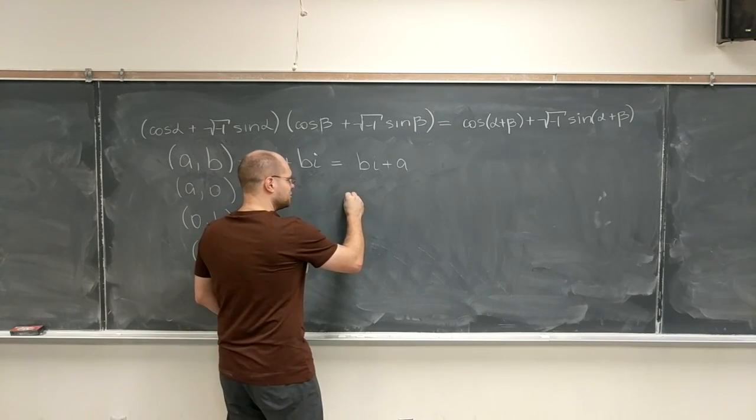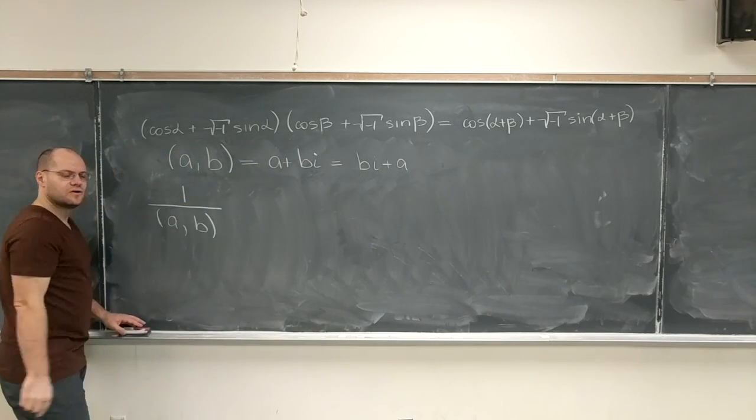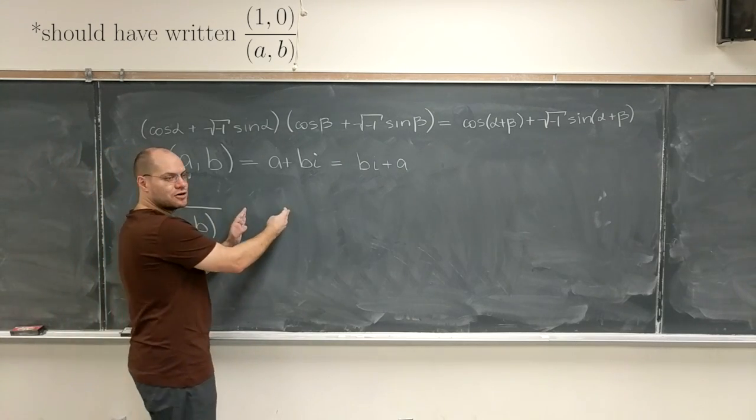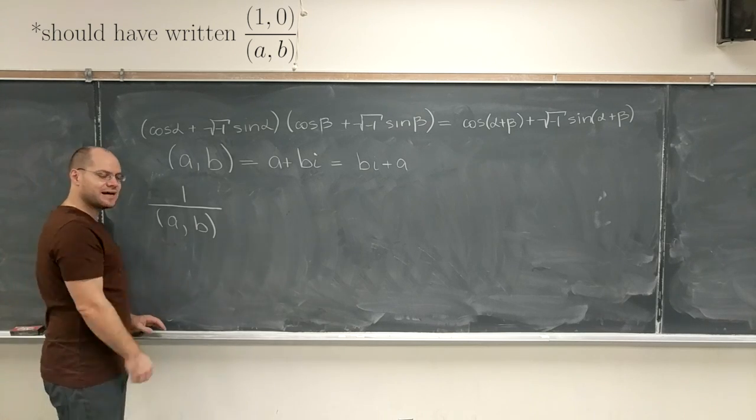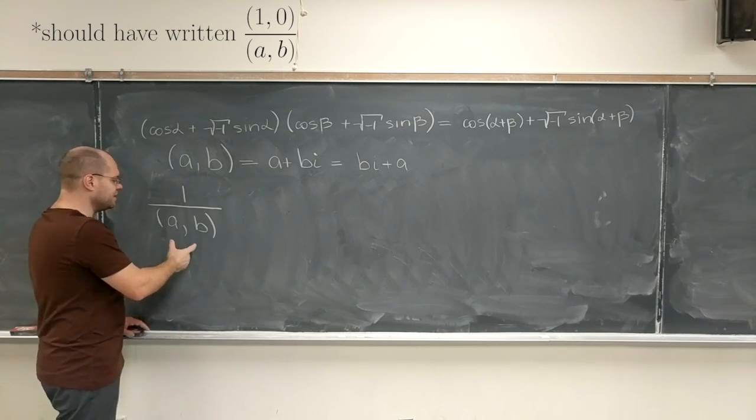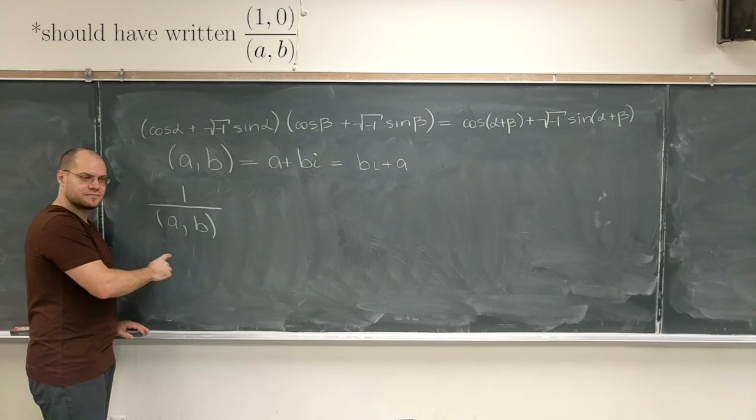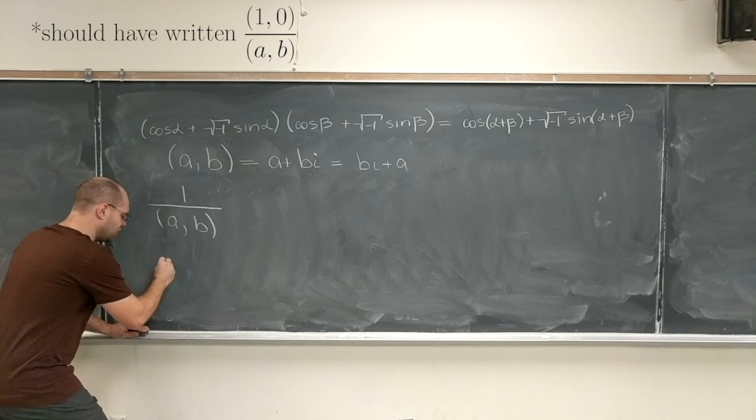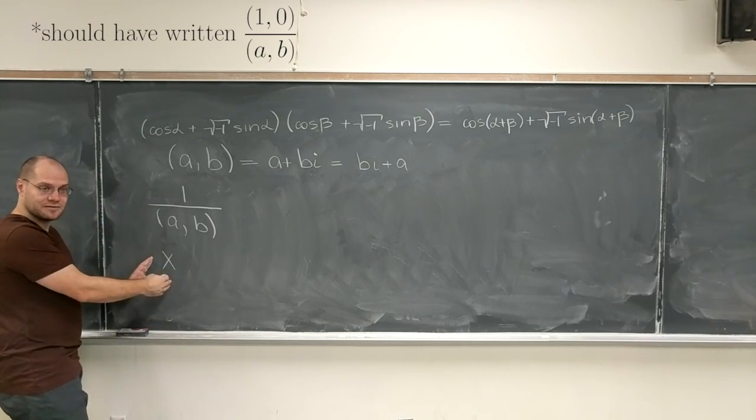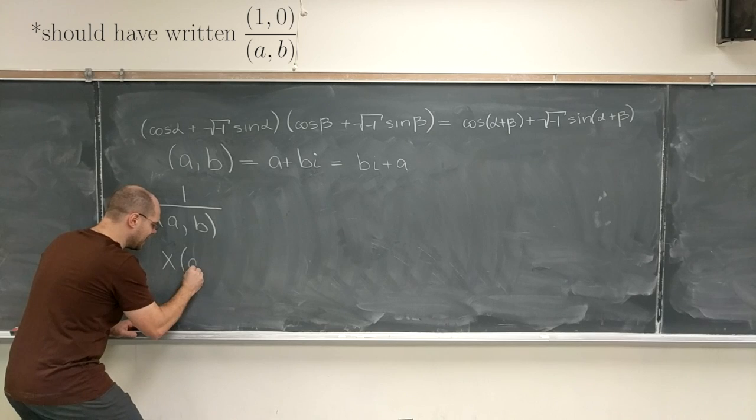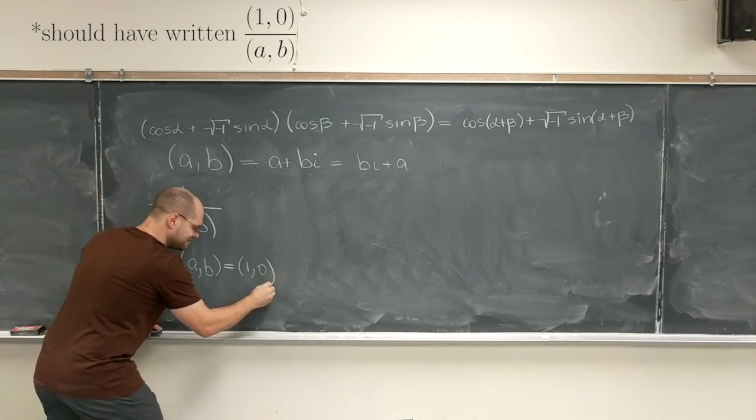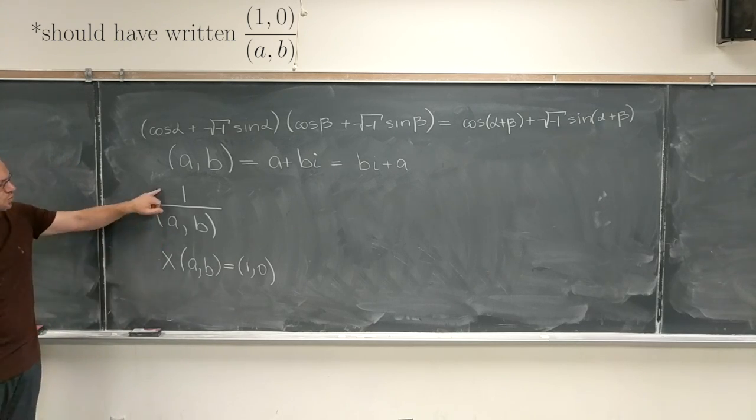So in Hamilton's notation, we have got to write this as a pair of numbers. This right now does not appear as a pair of numbers, but we need to come up with a number. So basically what this number is, is a number that solves the equation x, where x is a pair, a number in the sense that it's a pair, times (a, b) equals (1, 0). That's what we're looking for, that's what 1 over (a,b) means, it's the solution to this equation.